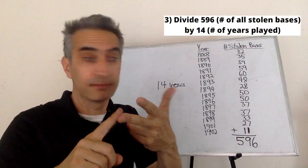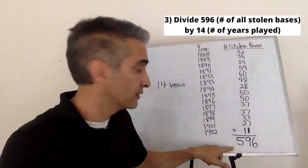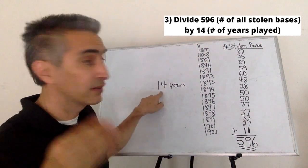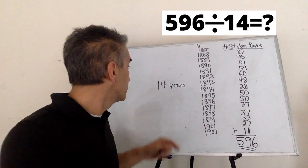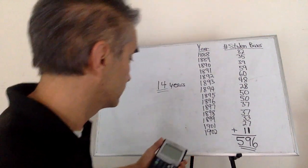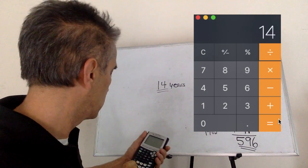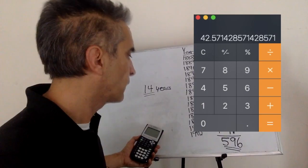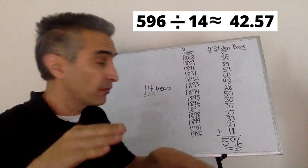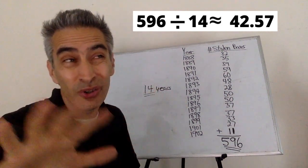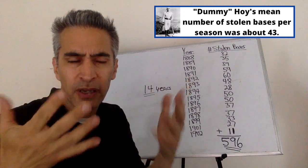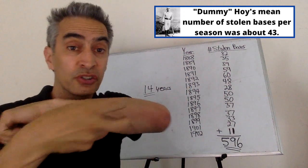Next step: we're going to take this 596 and divide it by 14. We can use a calculator. 596 divided by 14 equals around 42.57. So the mean equals around 43 stolen bases.